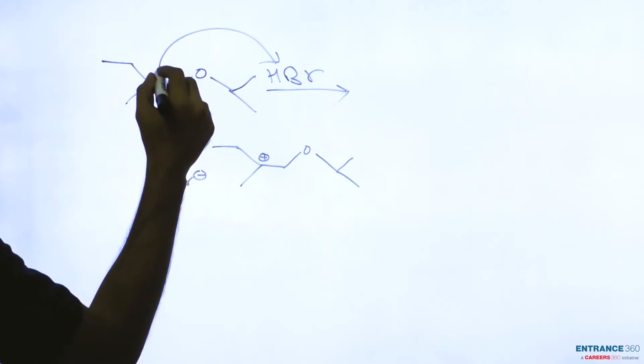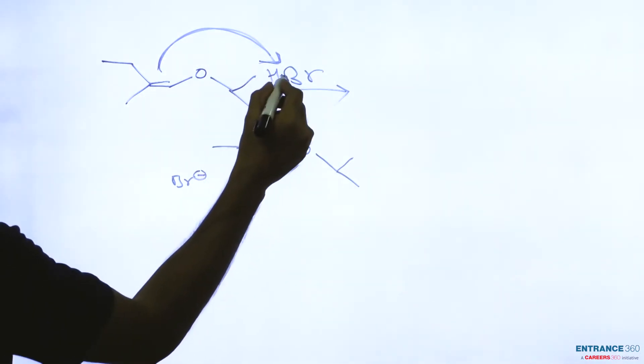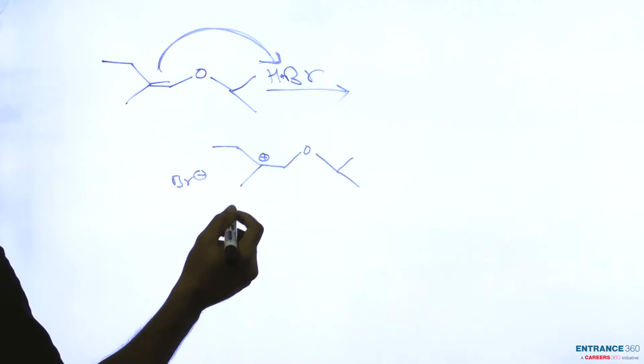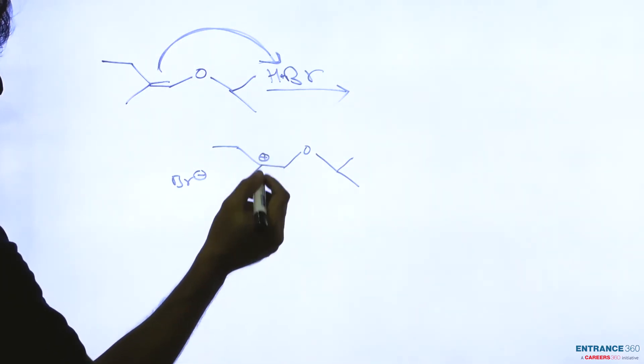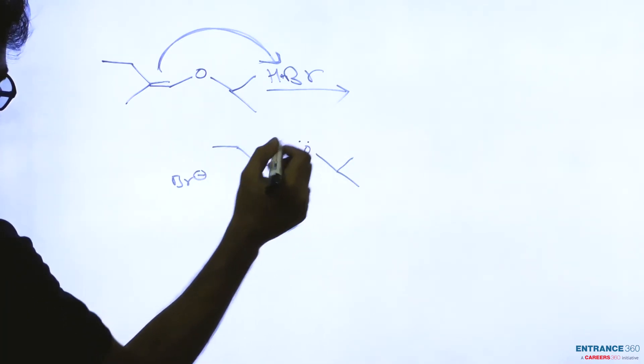The pi bond will attack on H+ from HBr and it will form a carbocation. The stability of the carbocation in this position will be higher because the lone pair of oxygen will stabilize this carbocation.